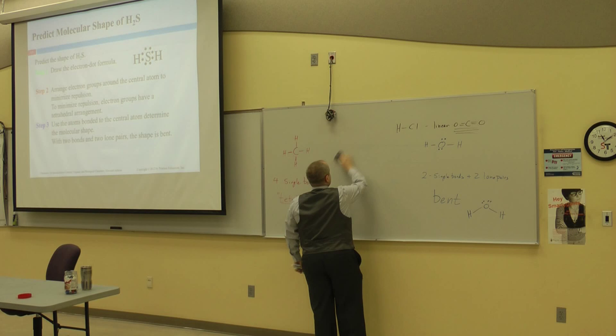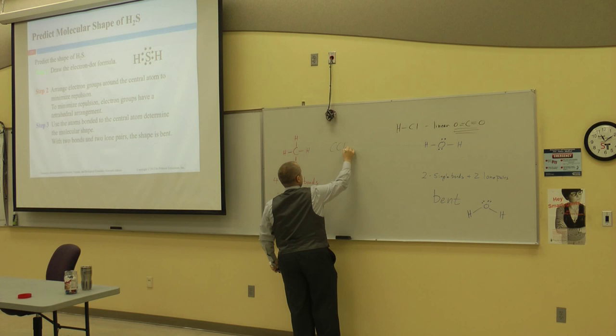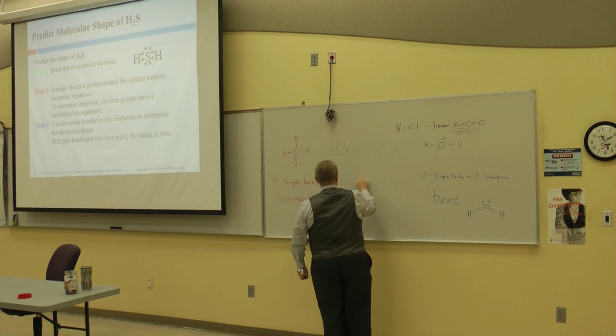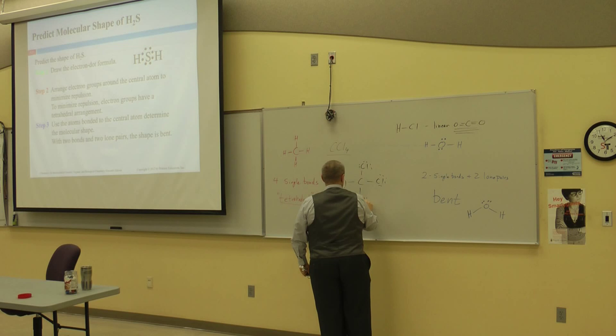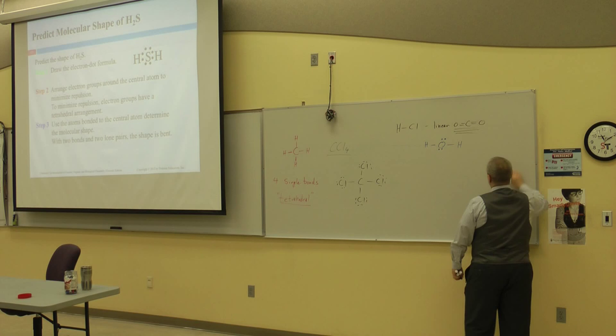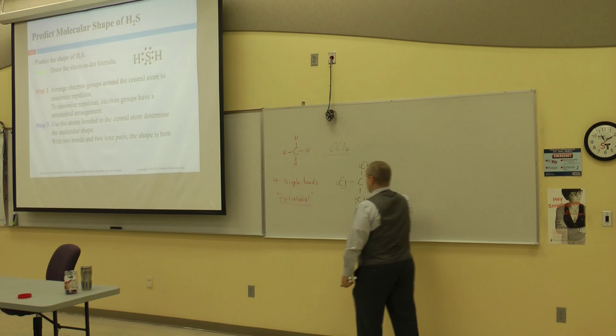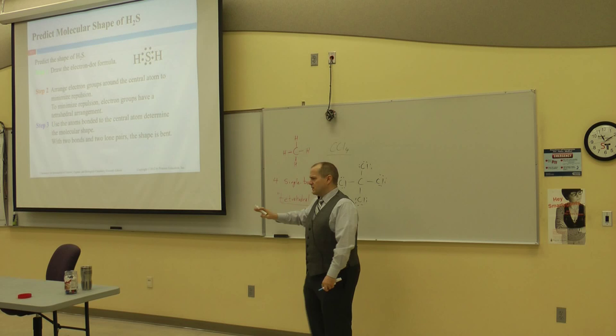Let's say we had CCl4 — carbon tetrachloride — that's a carbon with four chlorines attached to it. There's a carbon central atom with four single bonds. What must the molecular geometry be? Tetrahedral — four single bonds gives you tetrahedral. Pretty straightforward.